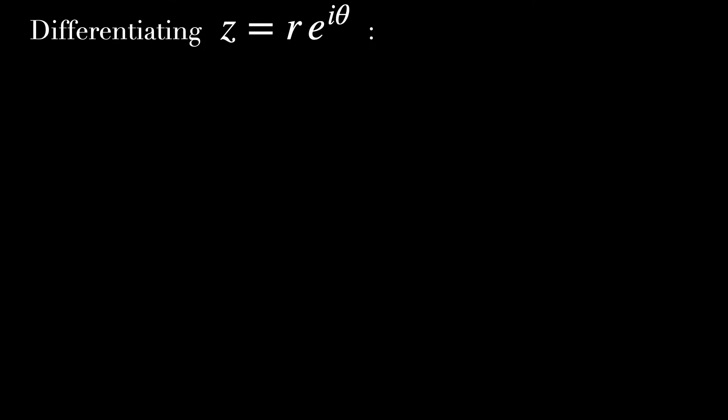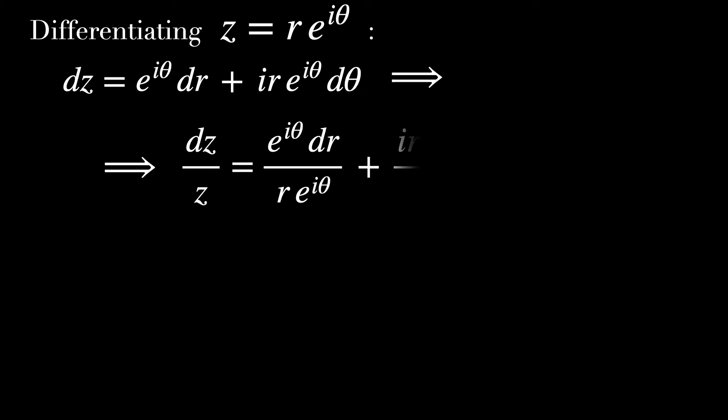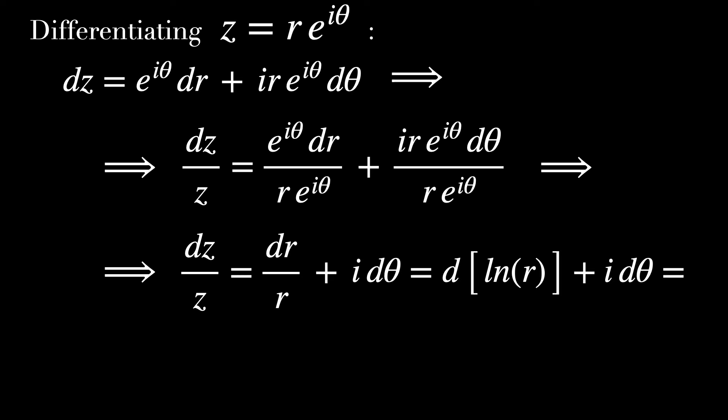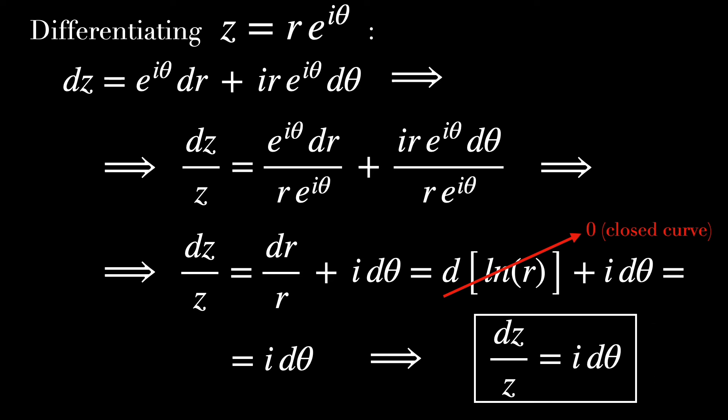And θ is the angle formed between the position vector and the x-axis. Now differentiating it, we get dz = e^(iθ)dr + ire^(iθ)dθ. Dividing everything by z and using polar coordinates, we find out that dz/z = dr/r + idθ. The first term is just d(ln r), which is 0 for a closed curve. And the second term remains the same. So we found out that dz/z = idθ.